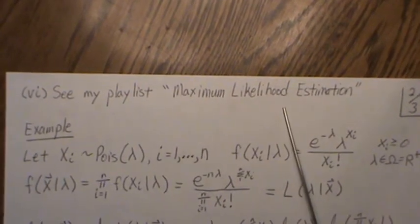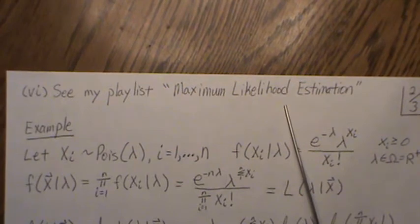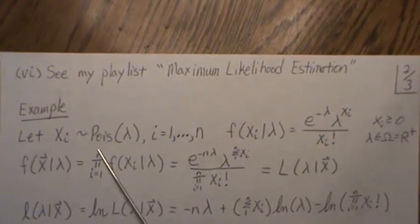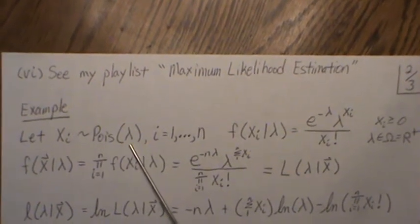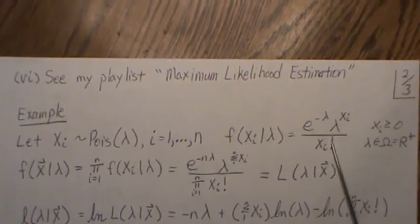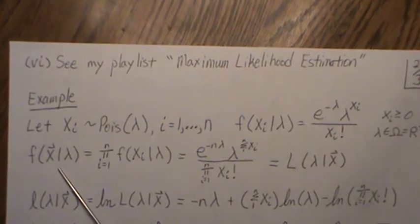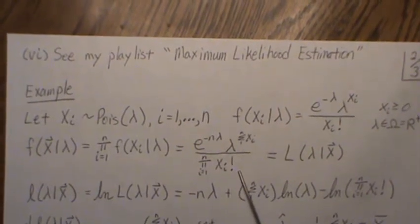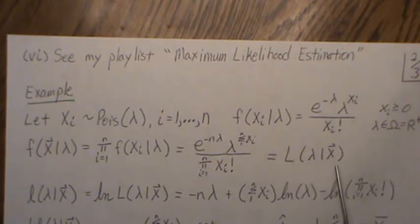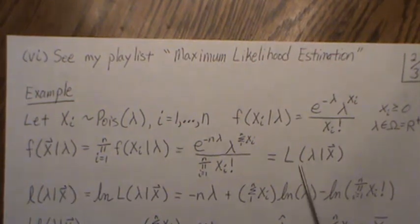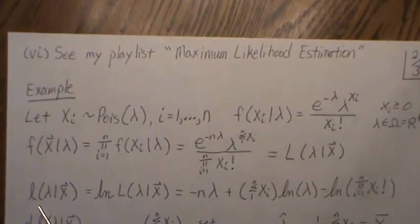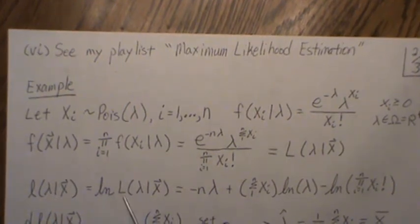Here's an example. Let's assume we have a sample from a Poisson distribution with parameter lambda, so F of Xᵢ equals the Poisson PMF. The joint PMF is the product of the individual marginals. To do maximum likelihood, we think of the sample as fixed and lambda as the variable — those two expressions look the same but conceptually are a little different. We now take the log-likelihood, which is the natural log of the likelihood.